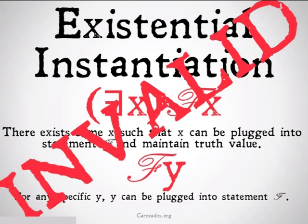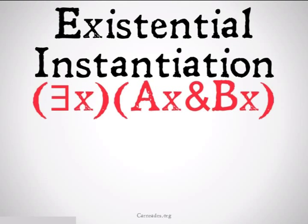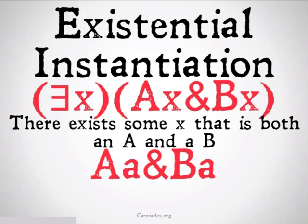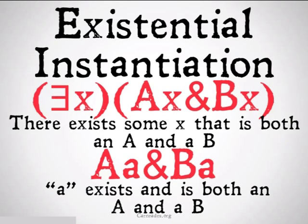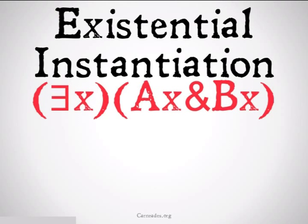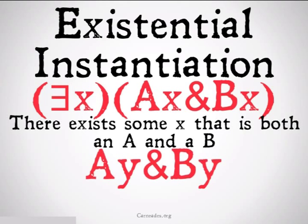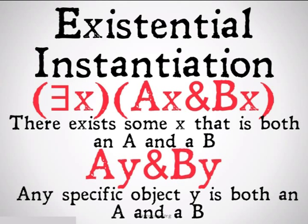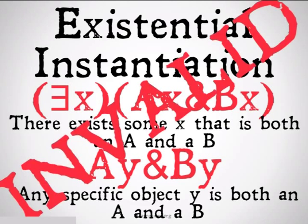A valid example of existential instantiation would be: there exists an X such that X is A and X is B, therefore A is A and A is B — we've gotten rid of the quantifier and replaced X with A. What we cannot do is take 'there exists an X such that X is A and X is B' and conclude that for any Y, Y is going to be A and Y is going to be B. That's invalid — we can't go from a specific case to the general case.